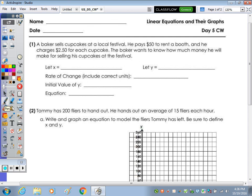So in number one, it says a baker sells cupcakes at a local festival. He pays $50 to rent the booth and he charges $2.50 for each cupcake. The baker wants to know how much money will he make for selling his cupcakes at the festival. As I mentioned before, it's good to sketch an x and y-axis to help you decide what you would let x equal and what you would let y equal. When looking at word problems, we're working in quadrant one, where x and y are both positive.